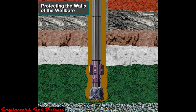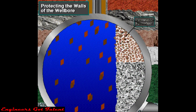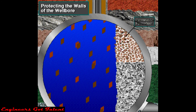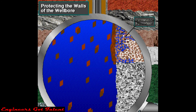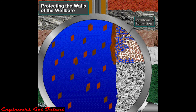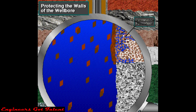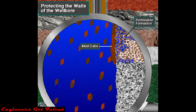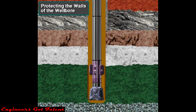Mud stabilizes the hole and keeps it from caving in. As mud moves up the hole, it usually flows by permeable formations — those that allow fluid to flow. When the mud is next to a permeable formation, pressure forces the liquid part of the mud, the filtrate, into tiny openings or pore spaces in the formation. This leaves behind a thin sheath of solid particles known as mud cake. These solids plaster the side of the hole, much like the plaster on the wall of a building, and the wall cake helps keep the hole from caving in.